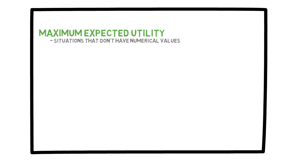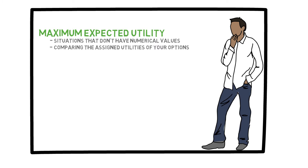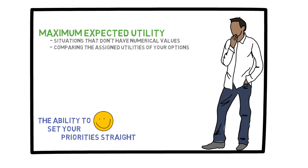In the most recent video, we discussed how to change our maximum expected value principle into the maximum expected utility principle for situations that don't otherwise have numerical values. The formula was exactly the same, but instead of values, we assigned utility to the options. The fundamental concept is simply comparing the assigned utility of various options when making a decision. One of the main factors in success and happiness is the ability to set your priorities rationally, so this skill is extremely important.